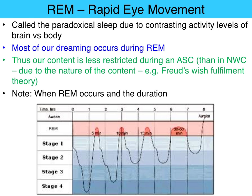Some key points about REM: it's called paradoxical because we have this highly active mind, as indicated by EEG readings, and we've got this inactive body — REM paralysis from the neck down. Most of our dreaming occurs during REM, though you can actually dream during stage 2, 3, or 4 of non-REM. The content of our REM dreams is less restricted than in normal waking consciousness, when we can restrict and inhibit our thoughts.